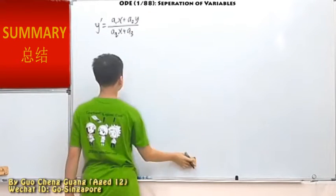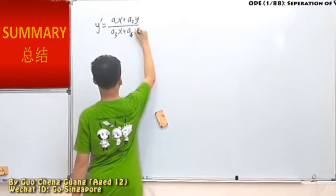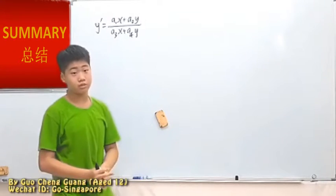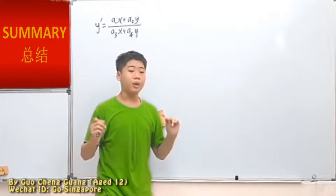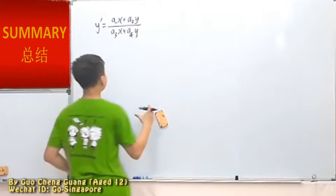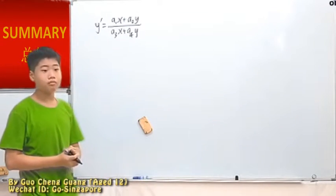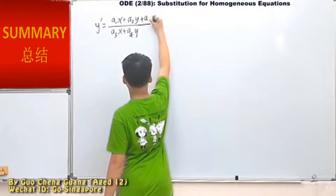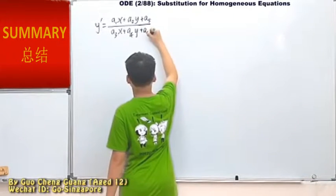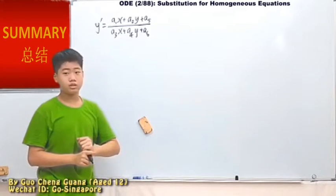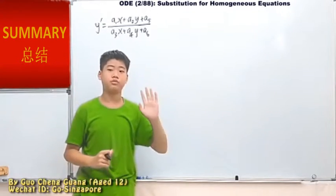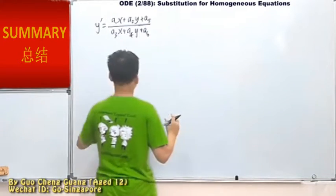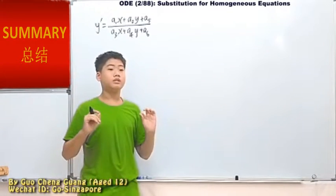In the last lesson, we had something like this — we made a homogeneous substitution. But right now, we are going to have something different. We're going to add on a constant, so that means it will be a non-homogeneous function. It becomes non-homogeneous, but the first step is still substitution.